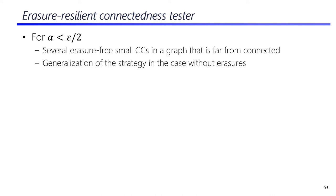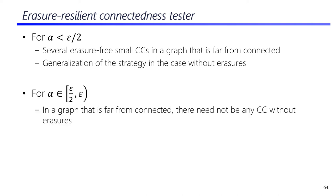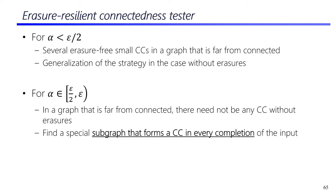So far I described the connectedness tester for graphs without erasures. When the fraction of erasures alpha is small, we show there are several small erasure-free connected components and the same strategy works. However, when alpha is at least epsilon over 2, there need not be any connected component without erasures. In this case, we redefine our witness to be special subgraphs that form a unique connected component in every completion of the input. We observe that we cannot apply the work investment strategy with these witnesses, and thereby obtain a larger query complexity.